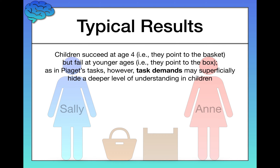Here are the typical results of this task. At age four, children succeed. They point to the basket and say that Sally should look in the basket because that's where she last saw it. They know that Sally is incorrect in her belief, but they understand that she has that belief. Now at younger ages, at ages three and lower, children fail. They point to the box. They say that Sally will look in the box because they know that's where the ball is, and they mistakenly believe that Sally also knows the ball is there.